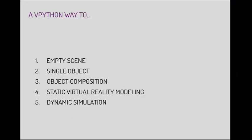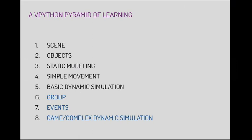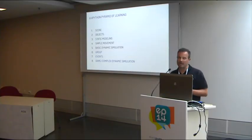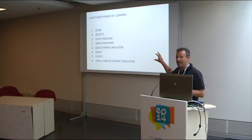A vPython way to teach or learn: we start from an empty scene, then use a single object, then do object composition with many objects. We continue constructing a static virtual reality model, then move on to dynamic simulation. In vPython terminology, there are 'frames' — I can group objects together and use them like a single object, as in many other programs. Then we can catch events to construct more complex animations and simulations.